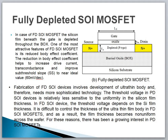Now we will talk about the fully depleted SOI MOSFET, which is different from the partial depleted SOI MOSFET. In the fully depleted SOI MOSFET, the silicon film beneath the gate is depleted all the way through to the buried oxide — there is no floating body and no undepleted region left. One of the most attractive features is its reduced body effect coefficient, which helps to increase drive current, transconductance, and improve sub-threshold slope to near the ideal value of approximately 60 mV per decade. Fabrication of fully depleted SOI devices involves development of an ultra-thin body and therefore requires more sophisticated technology.